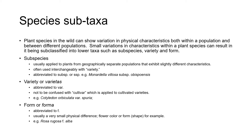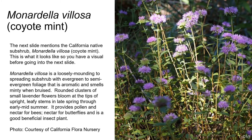Finally, form, or the Latin word forma, is used to distinguish plants that have very small physical differences — perhaps a slightly different flower color, shape, or growth habit. Form is usually abbreviated to just F when writing it. For example, Rosa rugosa f. alba, or Rosa rugosa forma alba. In the next slide we'll be mentioning the California native subshrub Monodella villosa, which is coyote mint. This is a photo of what the plant looks like, so you have a visual of it before going into the next slide.